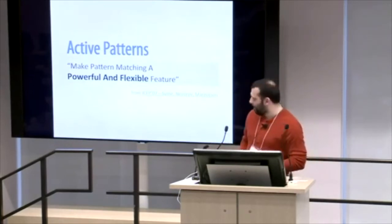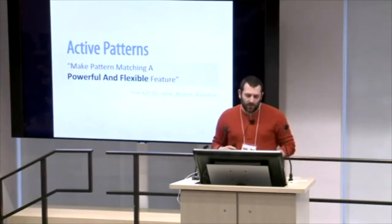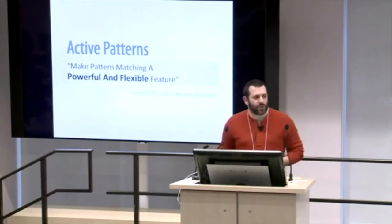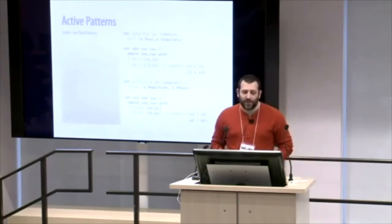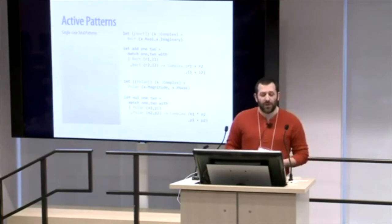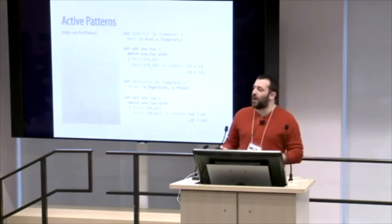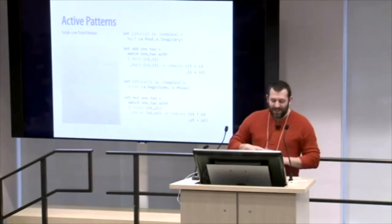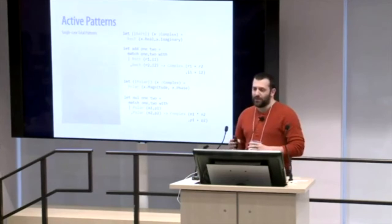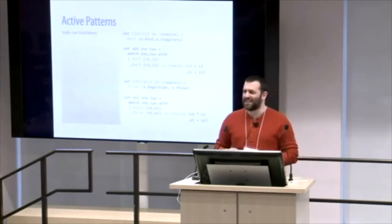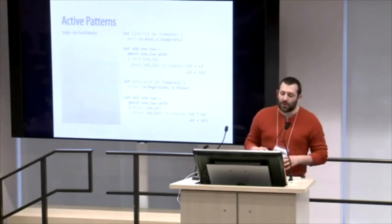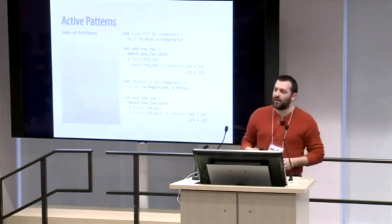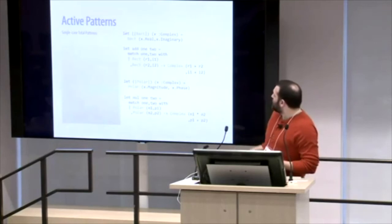There are four or so different kinds of active patterns. The first and simplest is a single-case total pattern. It's total because you have complete understanding of the values present in a domain — 100% sure of the inputs and outputs. What it does is provide an alternate view on your data. We have this 'banana clip' syntax — a parenthesis and a pipe — with an identifier in between, and the type we're matching against as an argument. In the case of a complex type, it takes the real and imaginary values out and pairs them with an identifier called rect.